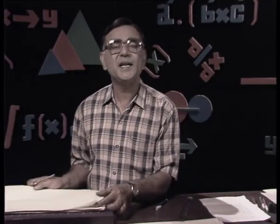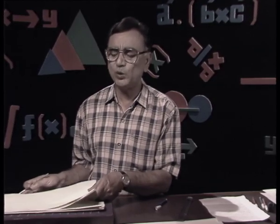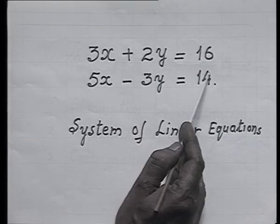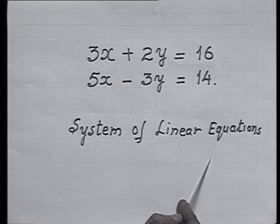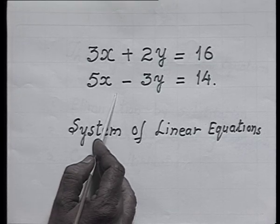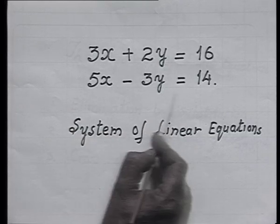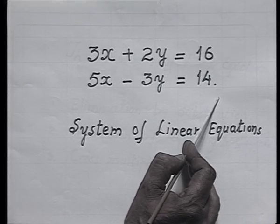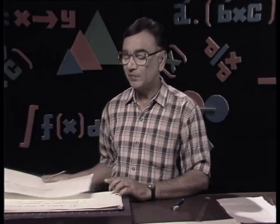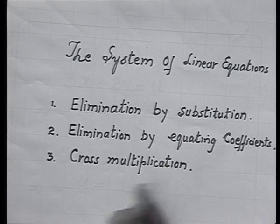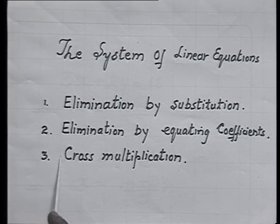If we have one equation it has infinite solutions. When we have two equations — for example, 3x plus 2y equals 16 and 5x minus 3y equals 14 — these form a system of linear equations. To solve a system of linear equations we can use algebraic methods, including elimination by substitution, elimination by equating coefficients, or the method of cross multiplication.